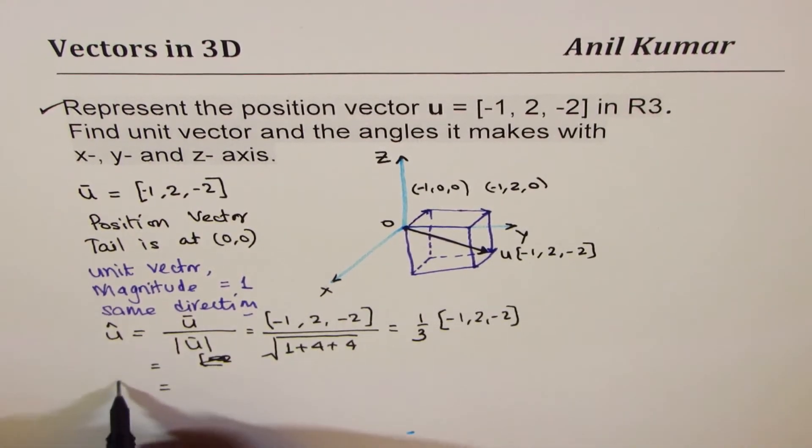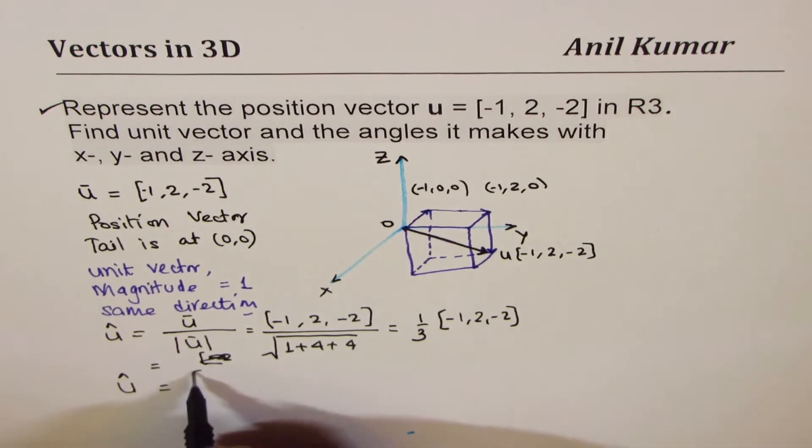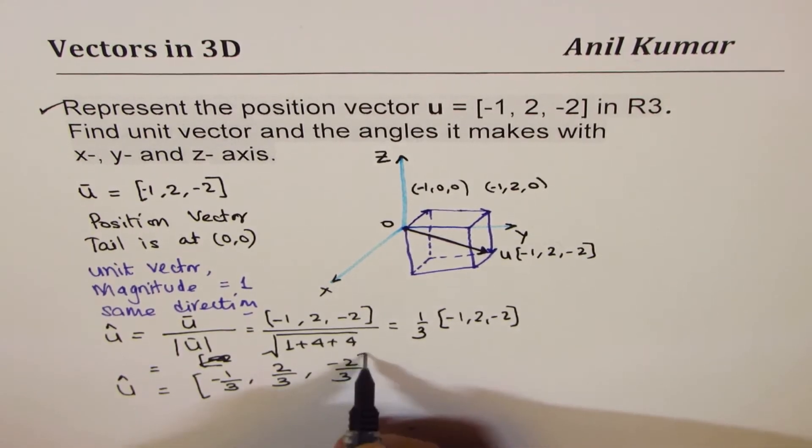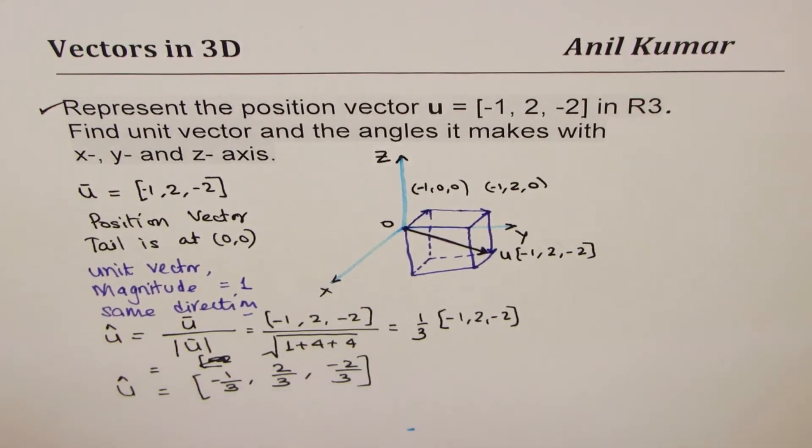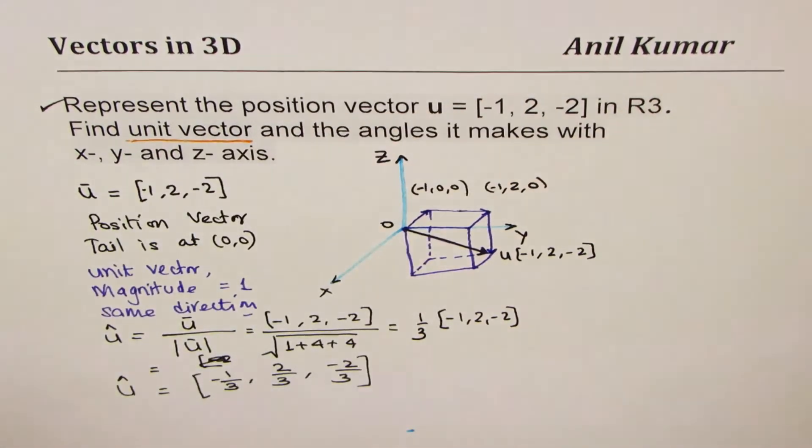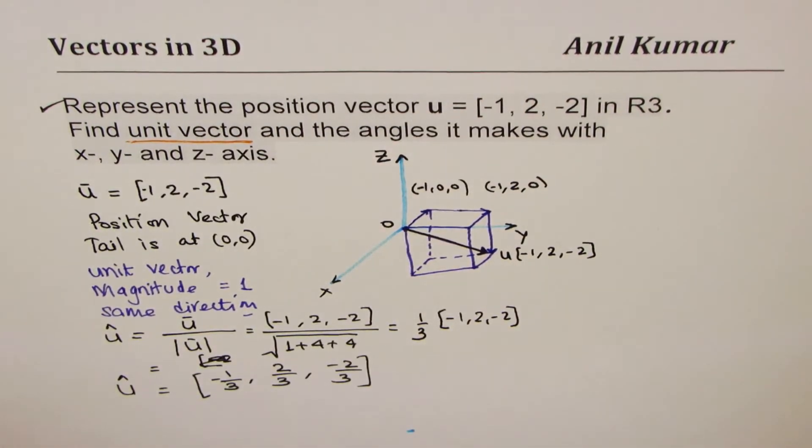So, let me rewrite this unit vector here as -1/3, 2/3, and -2/3. So we're doing the second part, that is to find the unit vector. Remember to find unit vector, you have to divide the vector by its magnitude.